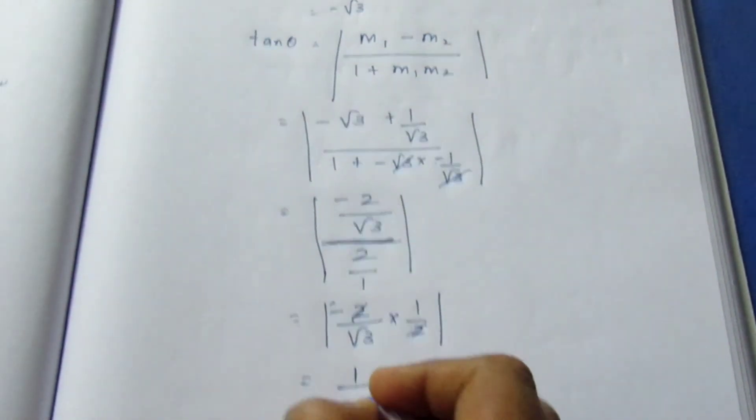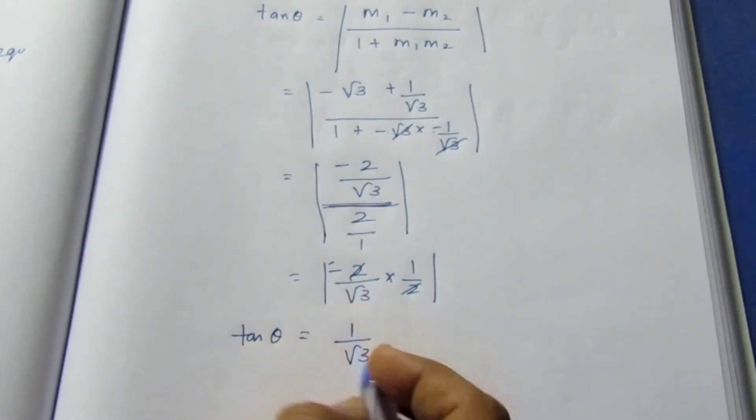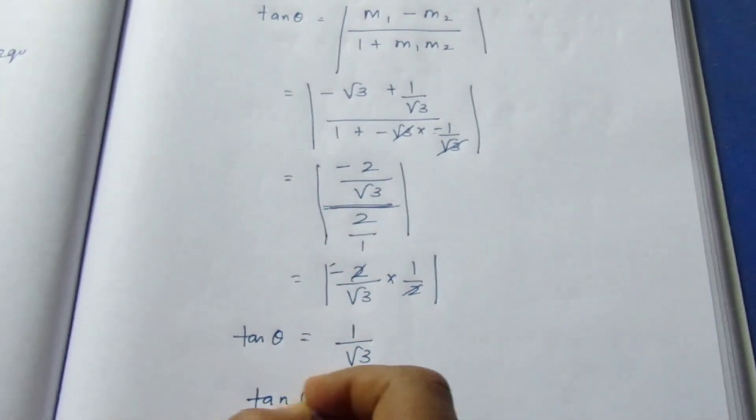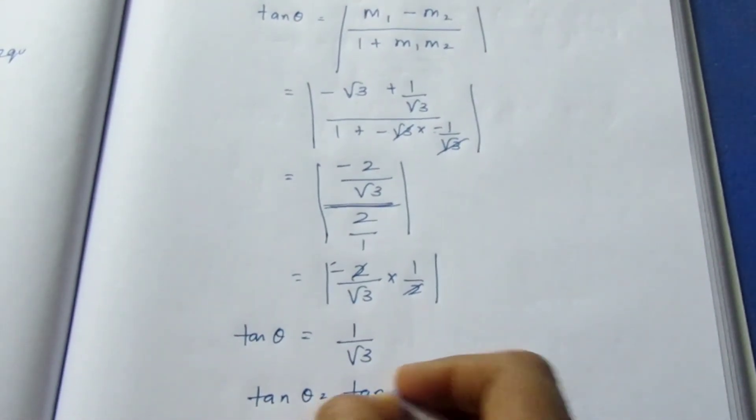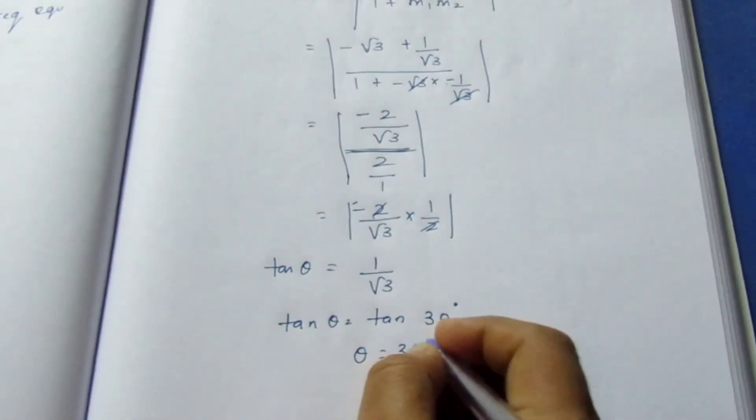-1/√3. Taking the mod, we get 1/√3. So tan θ = 1/√3. Then tan θ equals tan 30°. So θ value becomes 30 degrees.